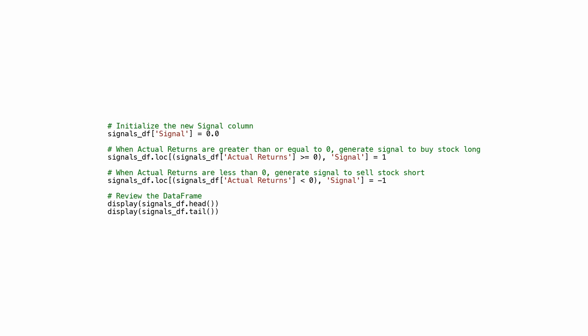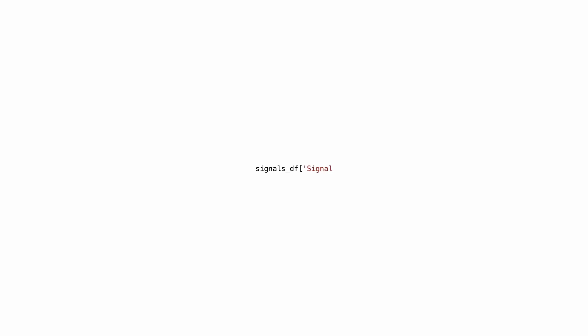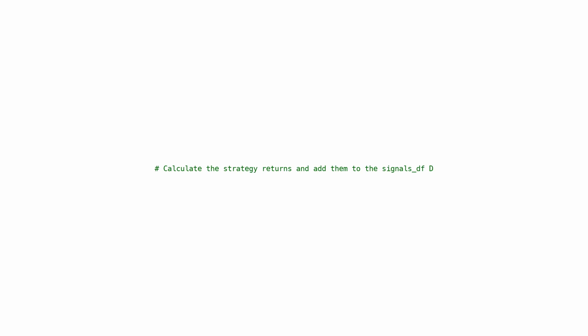In summary, this code generates buy and sell signals based on the values in the actual_returns column and updates the DataFrame with this information. The value_counts function is then used to count the occurrences of each unique value in the signal column of signalsDF, displaying the distribution of signals. This code also calculates strategy returns and adds them to the signalsDF DataFrame.